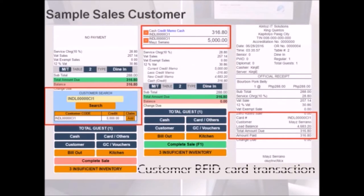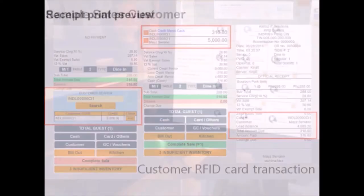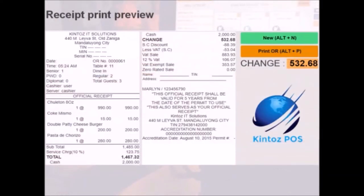Here is a sample of a sale using an RFID card. Once registered in the system, the card can be searched through the customer mode of payment. The sale is deducted on the card's balance and recorded for future reference. The receipt will display additional details regarding the method applied. Here is a preview for the receipt once a sale has been completed.